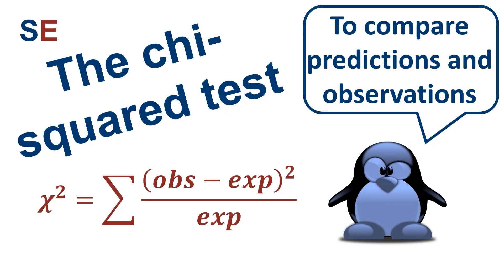The chi-squared test is used to analyze count data. It compares the number of observations in various categories to the numbers predicted. It's a widely used and very versatile technique, so let's take a look at how it works.